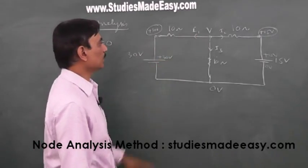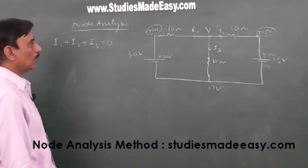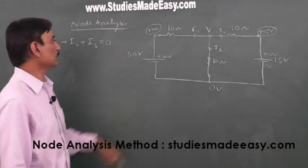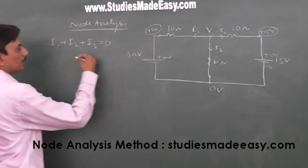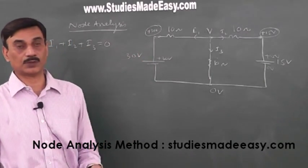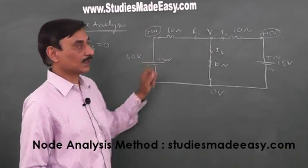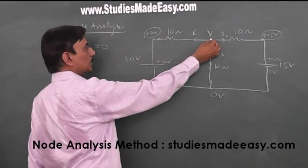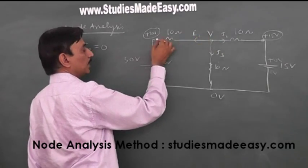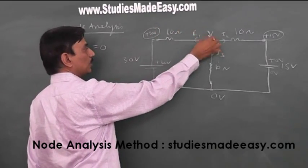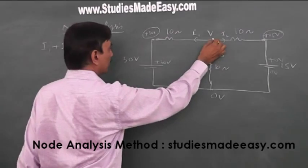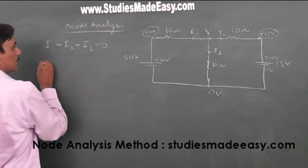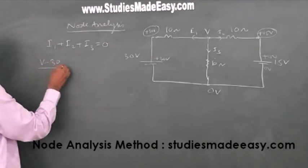I1 plus I2 plus I3 is equal to 0. I is V by R. If I have to find V, potential V is equal to IR. V stands for potential difference. This is at V, this is at 30 volt. Current is going, conventional current is going from here to here. It means it is at a higher potential, this is at lower potential. So the potential difference at the two ends of the resistor is V minus 30. This is the potential difference.